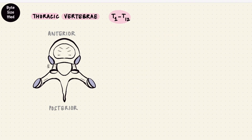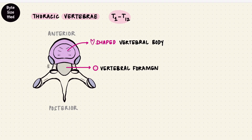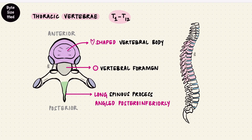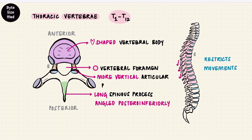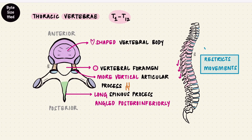Bringing back the parts of the typical vertebra: here the vertebral body is supposed to be heart-shaped when you look at it from above, while the vertebral foramen is circular. The spinous process is much longer here and angled posterior-inferiorly, so they overlap with the vertebrae below — backwards and downwards. That restricts movement, in addition to the more vertically oriented articular facets. Cervical vertebrae had more horizontal flat facets which allow more movement in the neck region; here they're more vertical, articulating with the vertebrae above and below. That's why thoracic vertebrae don't allow much flexion, extension, and lateral flexion, but they do allow rotation.